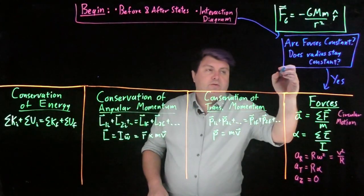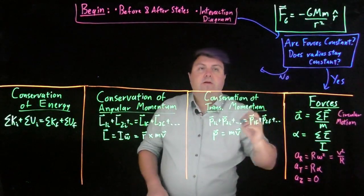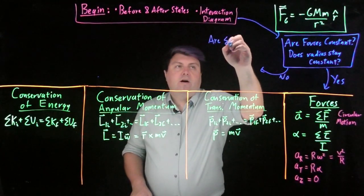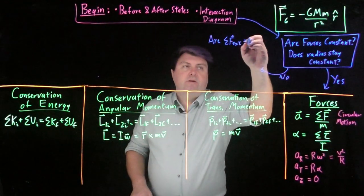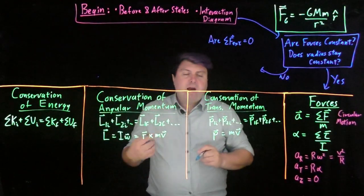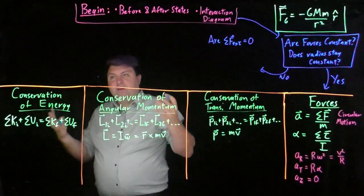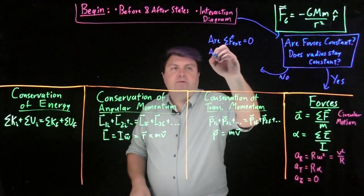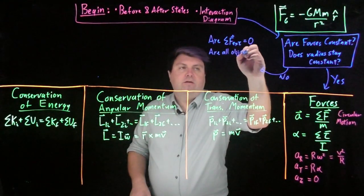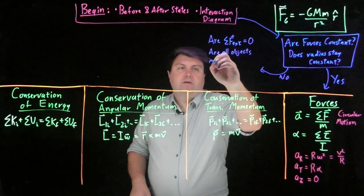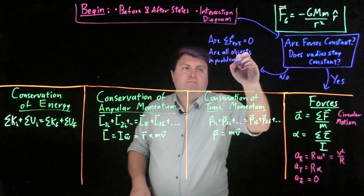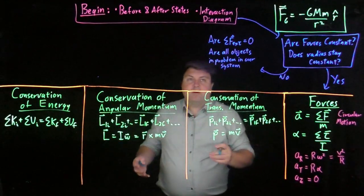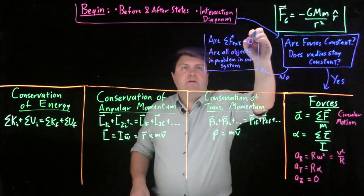So we could answer, of course, no to this. And then if we're answering no to this, we then want to ask, are the sum of the external forces zero? Do we have no external forces? And the way to think about this for gravity, gravity and space in general is very easy to have things be kind of separated. And so we have, are all objects in the problem in our system? If all of the objects in our problem are in the system, then we can't have any external forces.